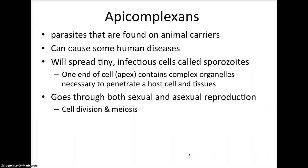Gametes form from these gametocytes, and fertilization occurs with the formation of a zygote in the mosquito's digestive tract. From there, an oocyst develops from the zygote in the wall of the mosquito's gut. Sporozoites develop in the oocyst and then migrate to the mosquito's salivary gland, thus repeating the cycle of how malaria, or particularly plasmodium, is spread.